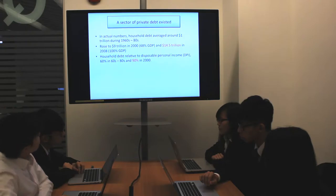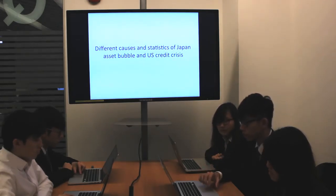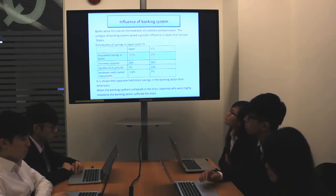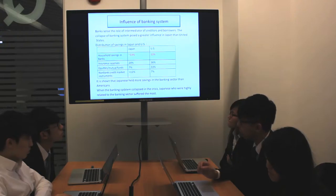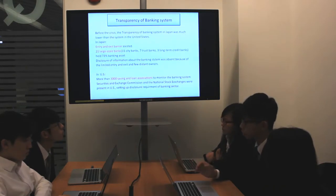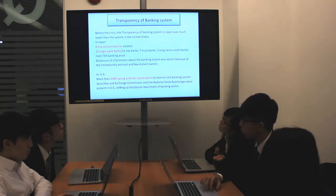After talking about the causal similarities of the Japan asset bubble and U.S. credit crisis, let's turn our focus on the differences. The first one is about the banking system. The significant difference between the U.S. and Japan was the proportion of household savings kept in banks — a high proportion was stored in Japan, so when the banking system collapsed, those who relied most on banking savings suffered the most. Additionally, banks in Japan several decades before enjoyed market dominance — only 21 large banks were in Japan around the 1980s, while more than 3,000 associations were in the U.S.